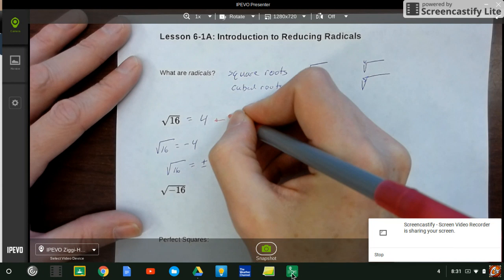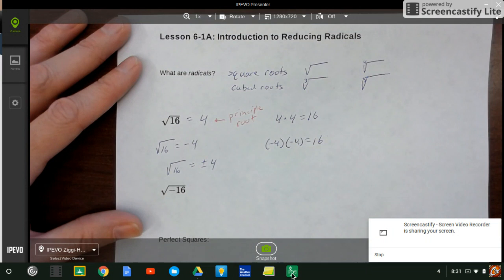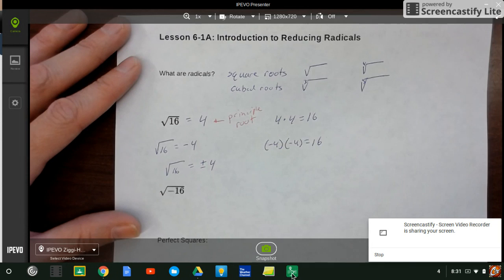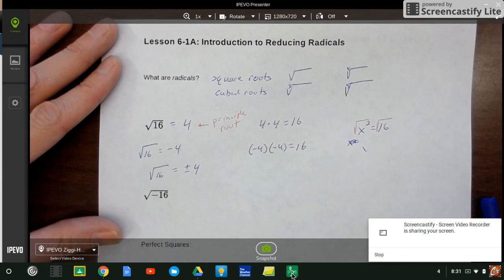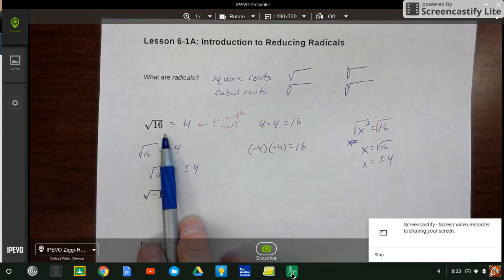The positive is what we call the principal square root. Anytime we look for the principal root, we're looking for the positive. Really, we only use this plus or negative if we're trying to solve. Like if I had a problem that said x squared equals 16, then to solve that I would take the square root of both sides. And that would give me x equals square root of 16, so x could be positive or negative 4.